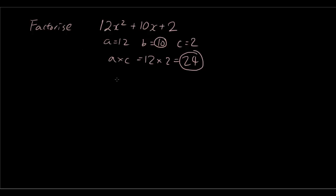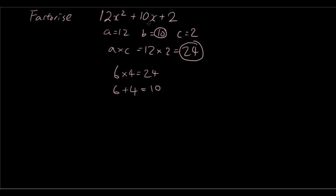So I can think of 6 times 4 is 24, and 6 plus 4 is 10. So therefore I'm going to rewrite my term in the middle, which is 10x, and separate it into 6x and 4x. So 12x squared plus 6x plus 4x plus 2. And let's just see what happens. So in the first two terms, 6 is definitely a common factor. x squared plus x, so x is a common factor. So I have 6x bracket x plus 1.